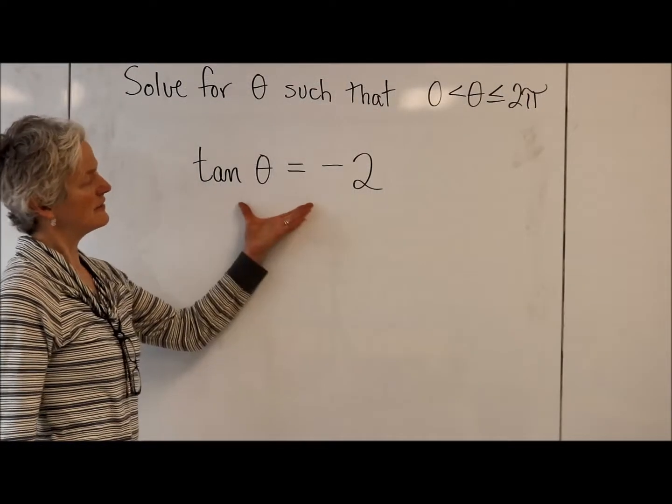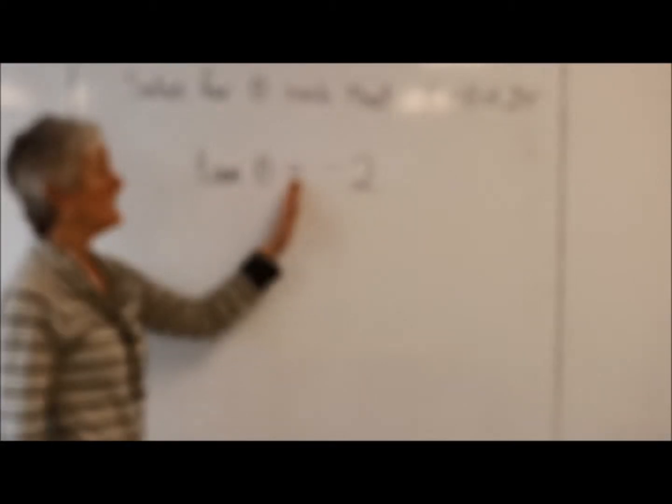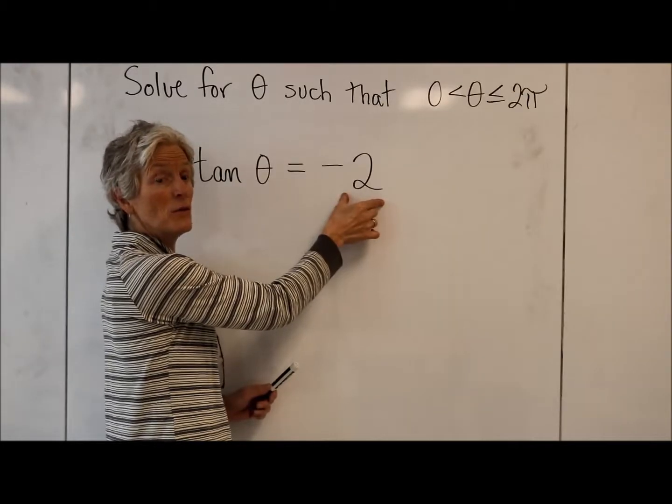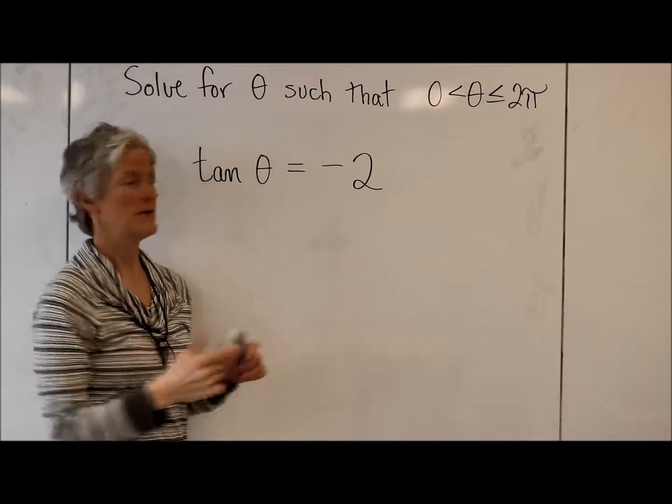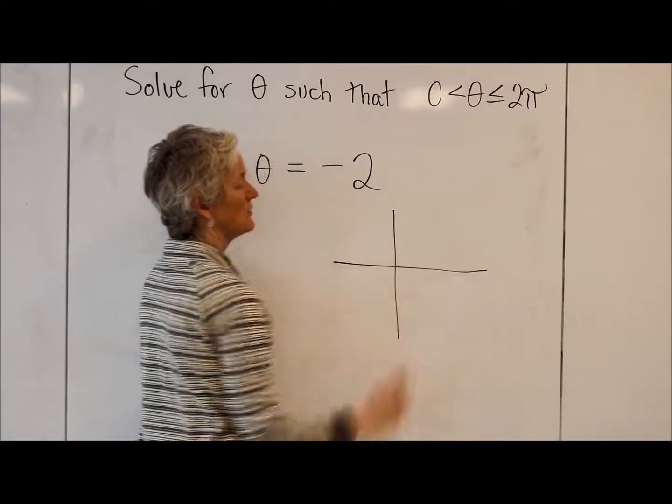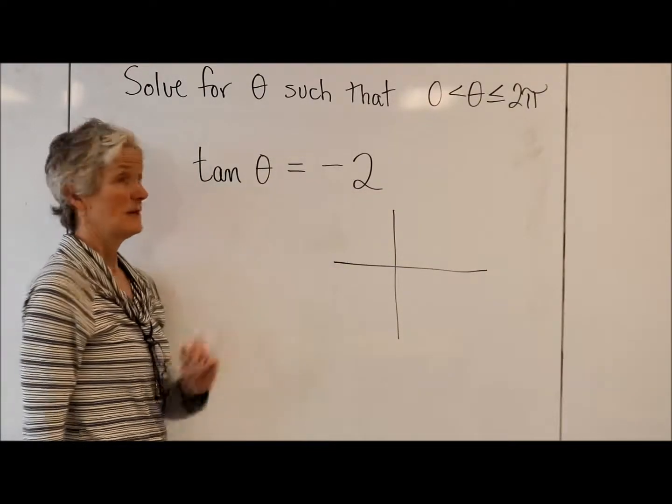Let's solve this trig equation. Tan of some angle equals negative 2. So I'm looking for the angle that would give me a ratio of sides, y over x is tangent, of negative 2. I always start with my picture. Picture is worth a thousand words. Pictures are incredibly useful when you're dealing with trig.